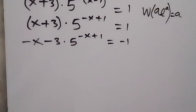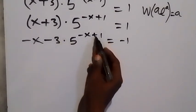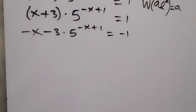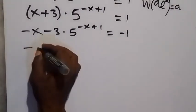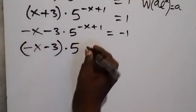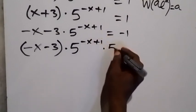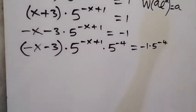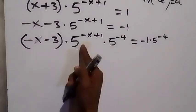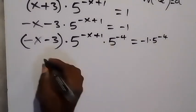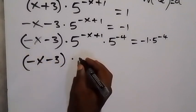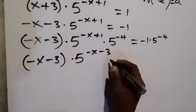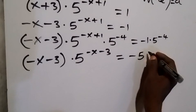The next step: we have minus 3 and plus 1 in the exponent. Let's make this plus 1 become minus 3 — what we need to add to this power is minus 4. So in the same way, we multiply both sides by 5 raised to power minus 4. The left side becomes minus x minus 3 multiplied by 5 raised to power minus x plus 1, then multiplied by 5 raised to power minus 4. The right side becomes minus 1 times 5 raised to power minus 4. Adding the powers on the left (same base multiplied): minus x minus 3, with exponent plus 1 minus 4 equals minus 3. So we get minus x minus 3, and on the right we can write it as minus 5 raised to power minus 4.